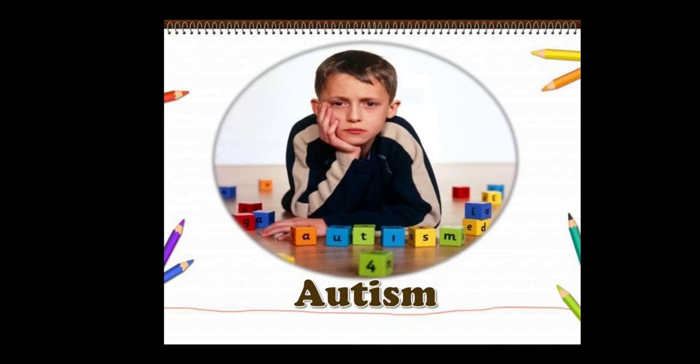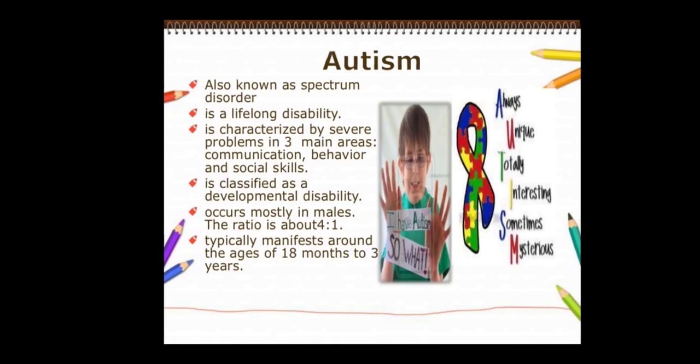First is autism — this is very important. Autism is also known as autistic spectrum disorder. It is a lifelong disability characterized by severe problems in three main areas: communication, behavior, and social skill.